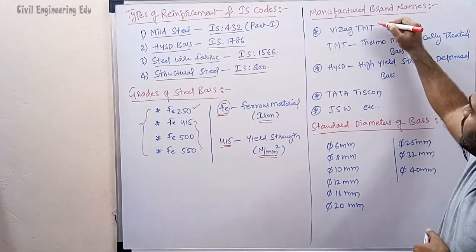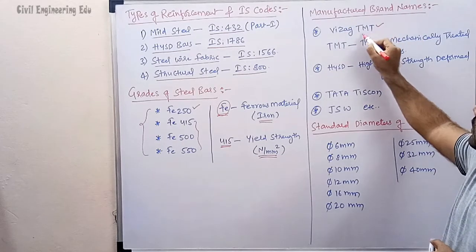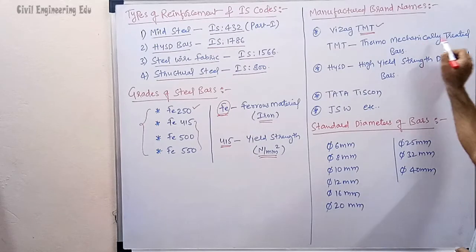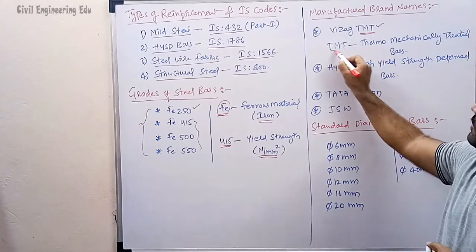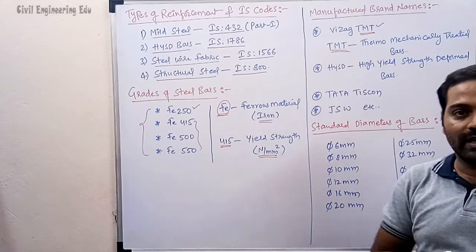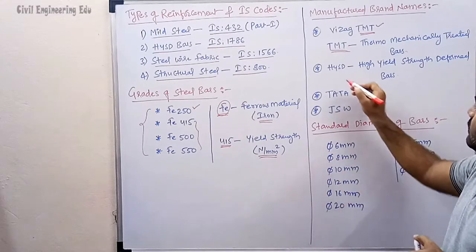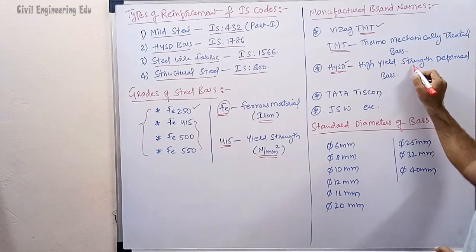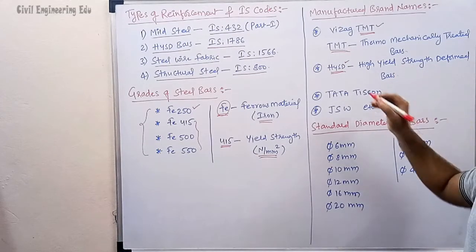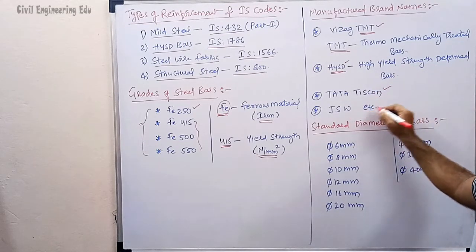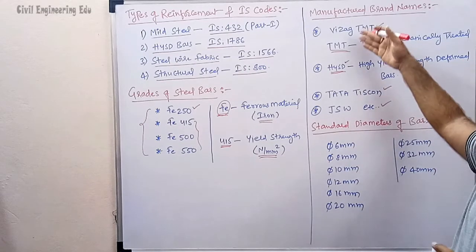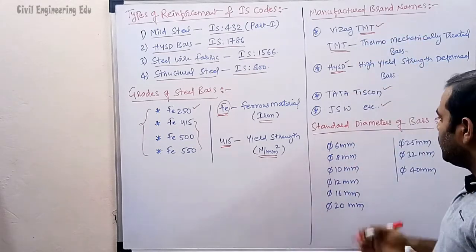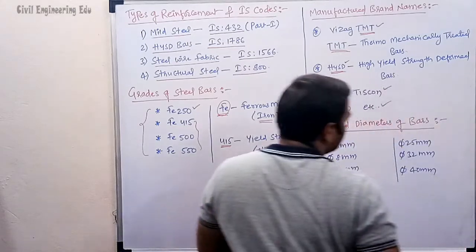There are some common brand names used in RC structures. For example, Vizag TMT — TMT stands for Thermomechanically Treated bars. HYSD stands for High Yield Strength Deformed bars. Other brand names include Tata Tiscon and JSW. These are the brand names commonly used in construction projects.